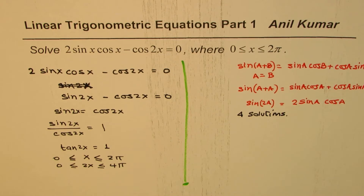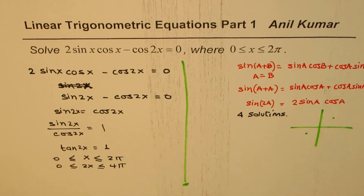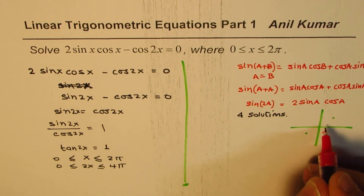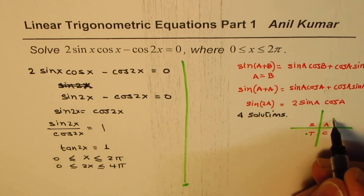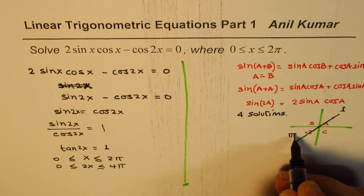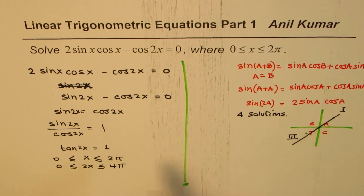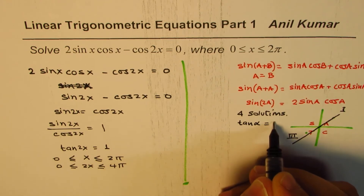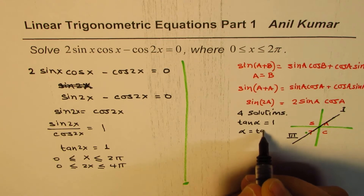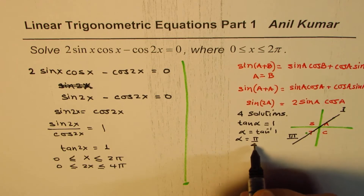Since tan is positive, the solutions should be in quadrant 1 and quadrant 3 — that's from the CAST rule. We are expecting 4 solutions in quadrant 1 and quadrant 3. To find the related acute angle, we use tan α = 1, so α = tan⁻¹(1) = π/4.